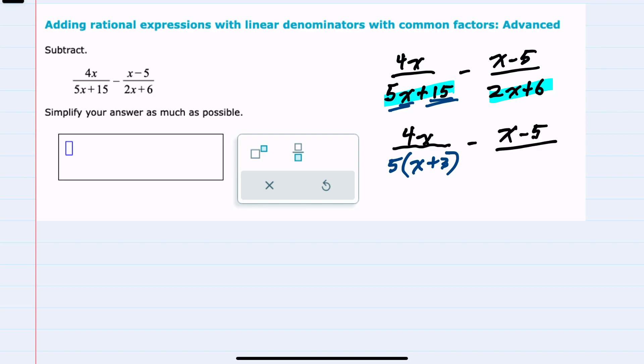For this second fraction I can also factor out a number. This time they have a common two factor, so factoring out a two from the first term I'm left with an x, factoring out a two from that second term a plus three.